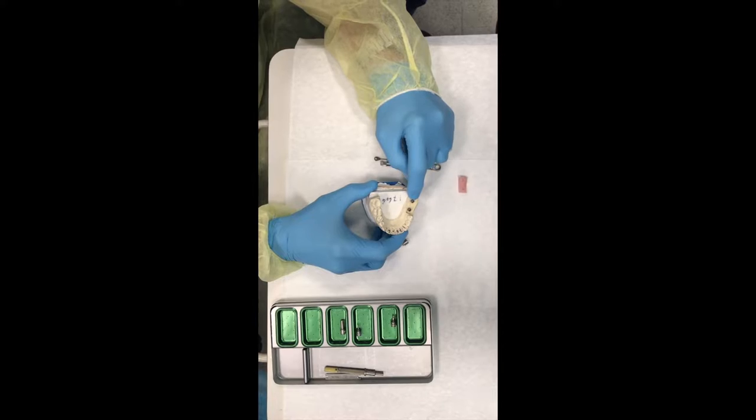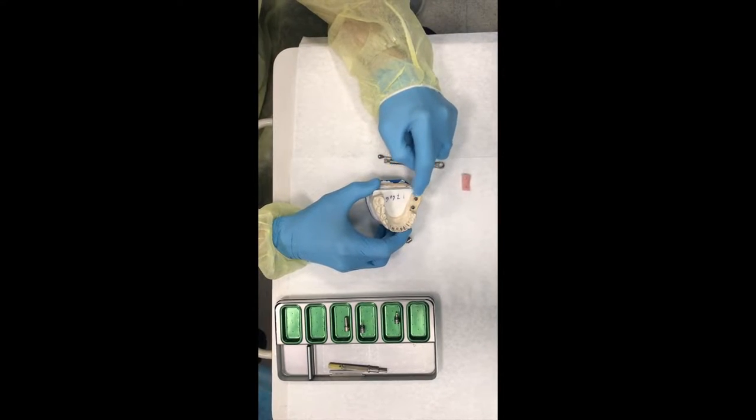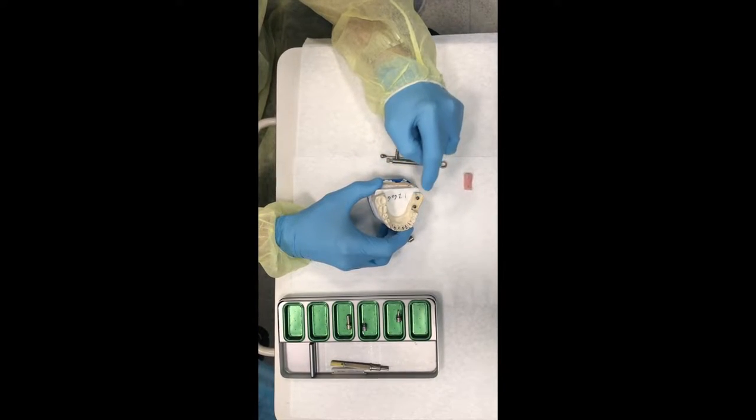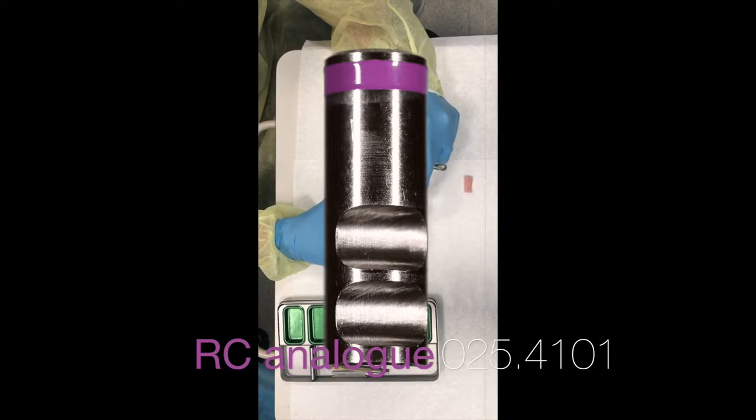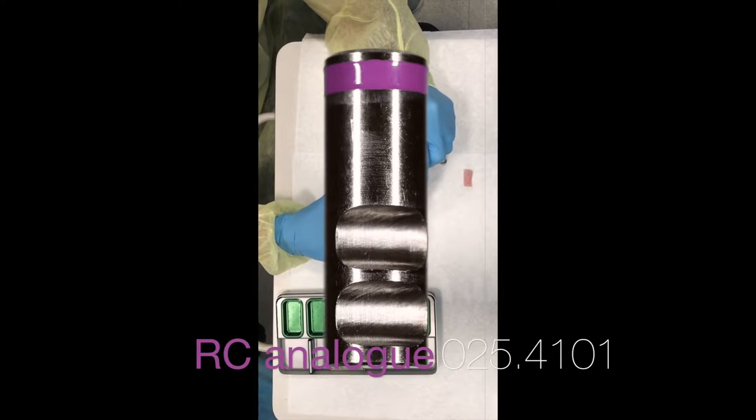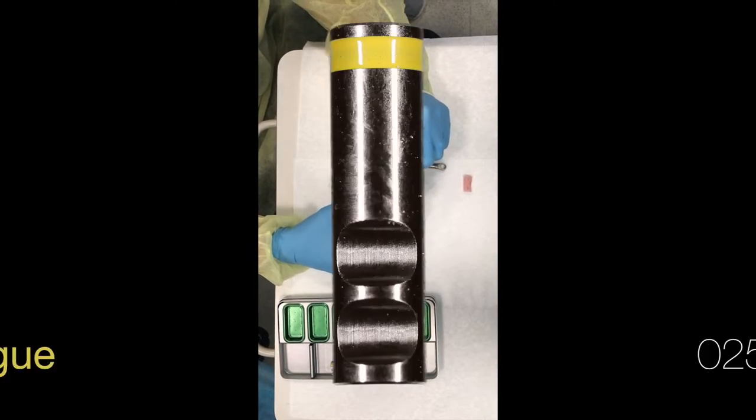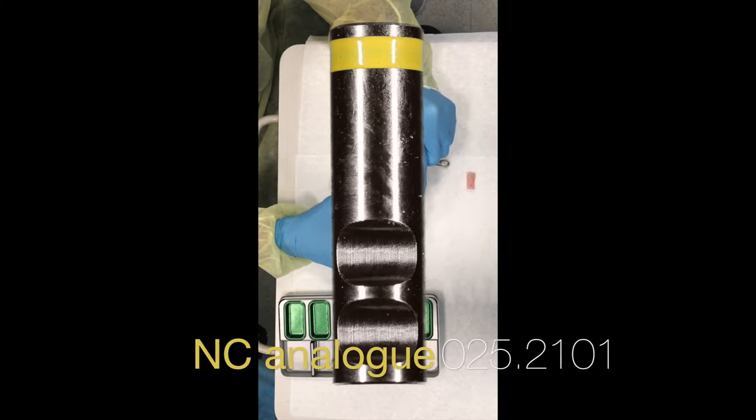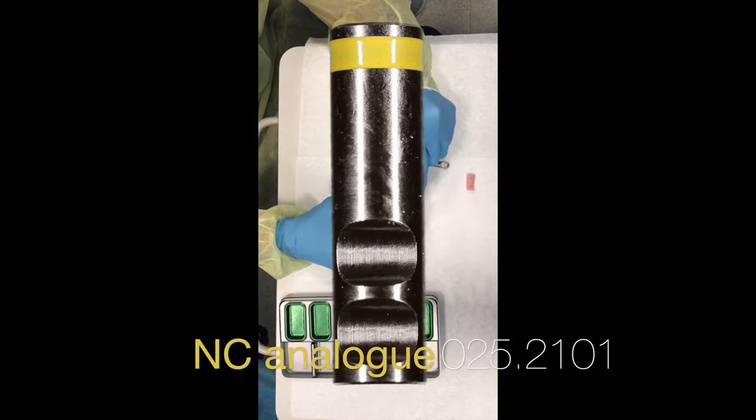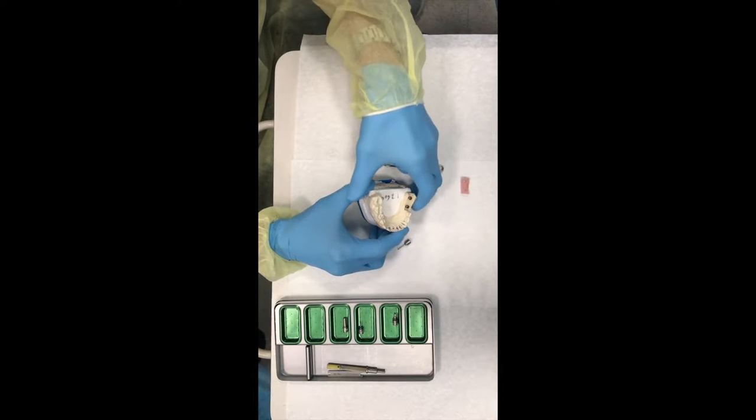RC meaning regular connection versus a narrow connection. Whether the implant is 4.1 millimeters or 4.8 millimeters, it still uses the same exact analog. The NC is a yellow stripe, the RC is a purplish sort of lavender colored stripe.